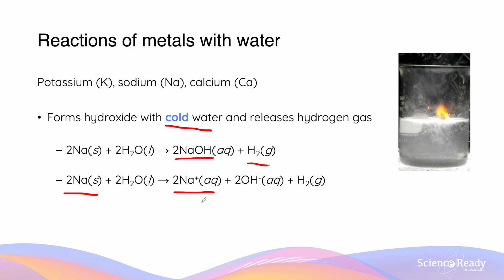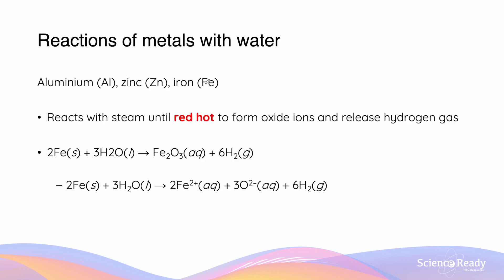Because potassium, sodium, and calcium are so reactive, the energy they release when becoming ionised is so great that it actually ignites the hydrogen gas produced by the reaction, as we can see in the image to the right. Aluminium, zinc, and iron will react with steam until red hot in order to form oxide ions and release hydrogen gas. They require steam because they are transition metals with high first ionisation energies.